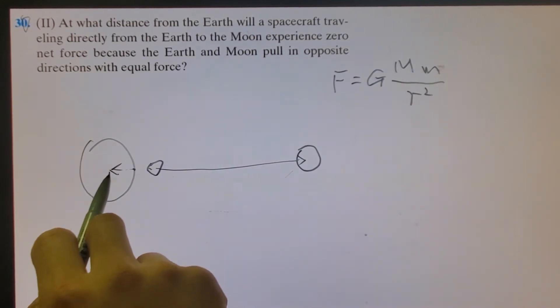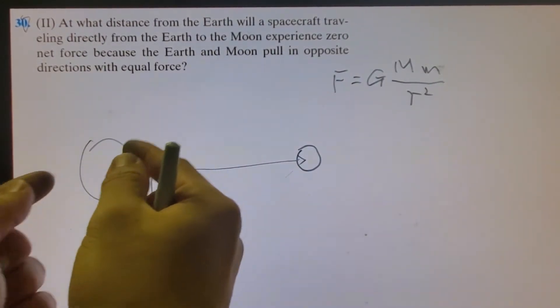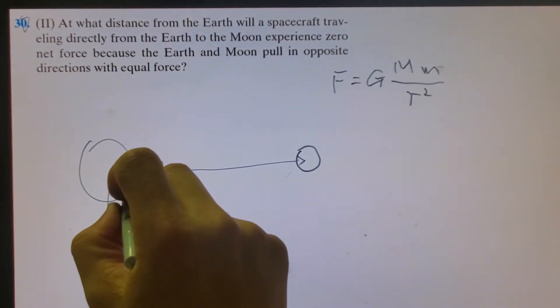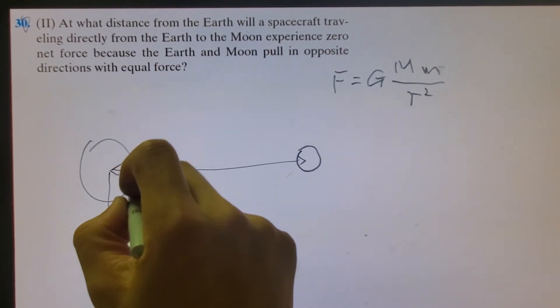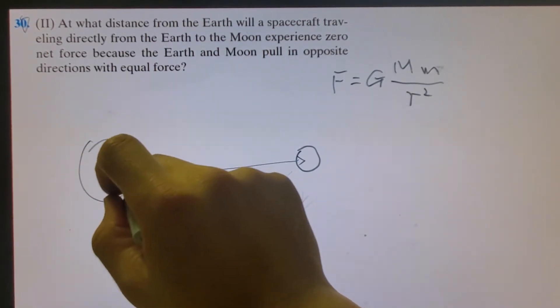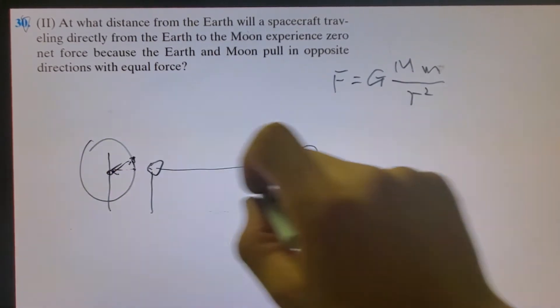So over here, if the R is that small and the M is big, it will feel a higher force over here than over here. That's why when we stand on the Earth, why don't we fly to the moon? Because the gravitational force is higher on Earth than due to the moon.